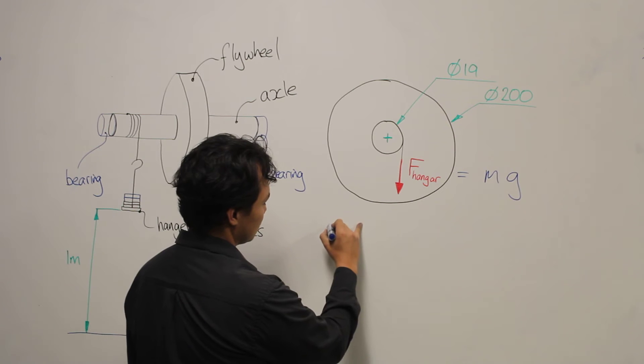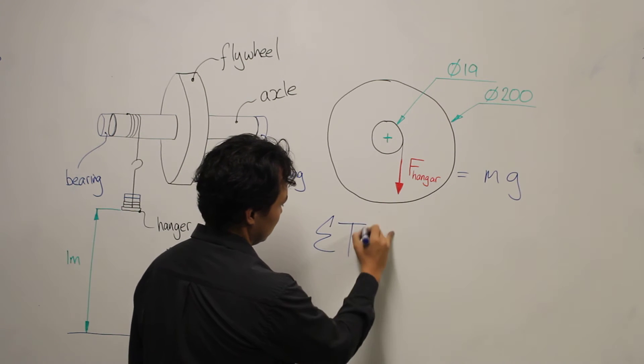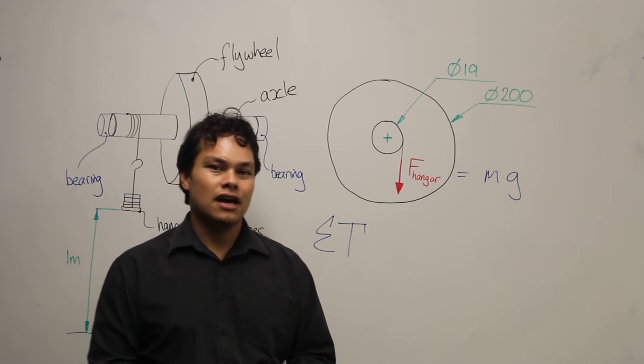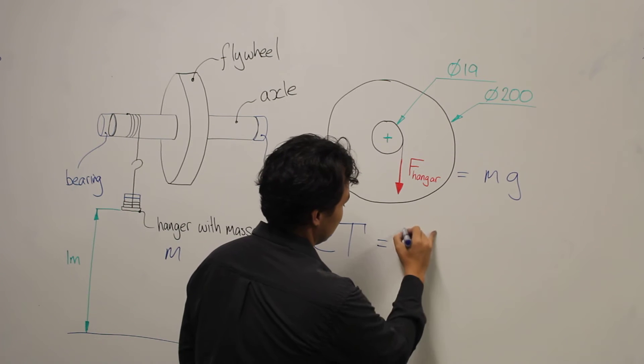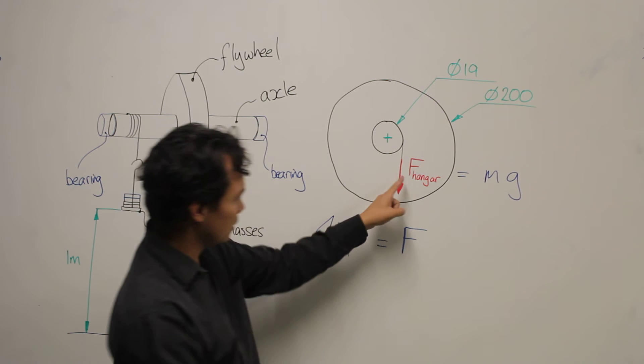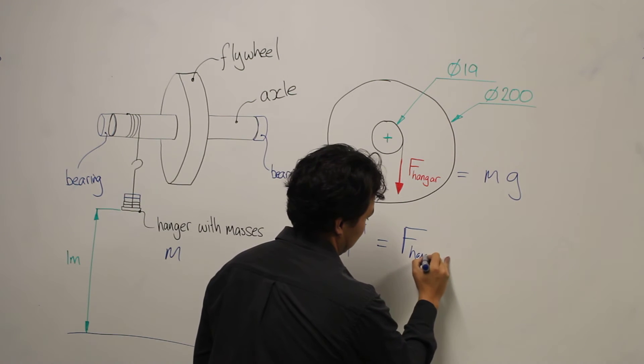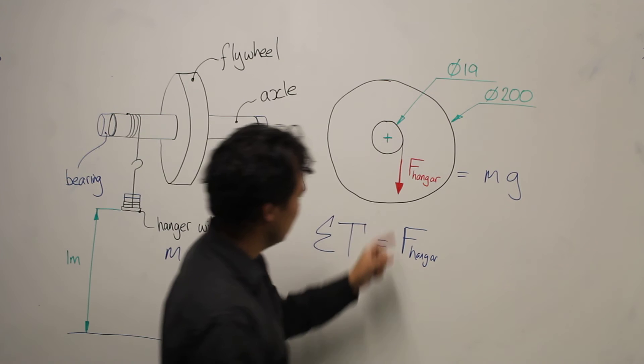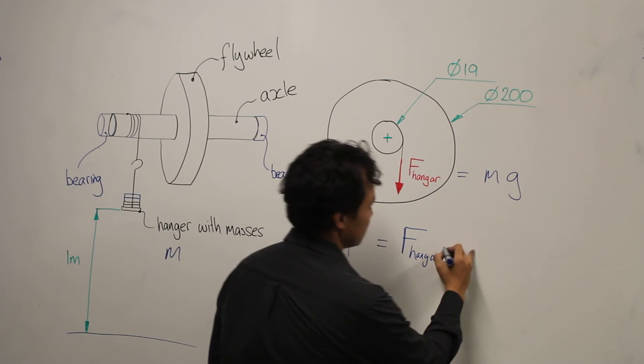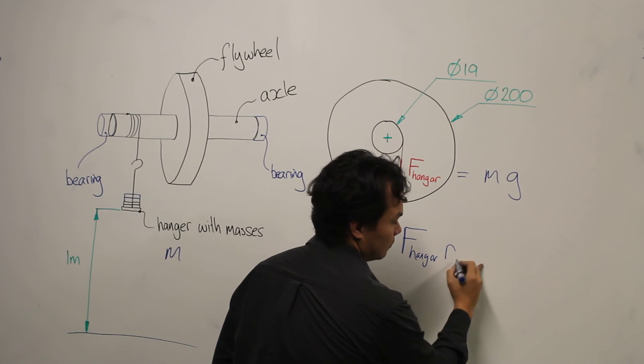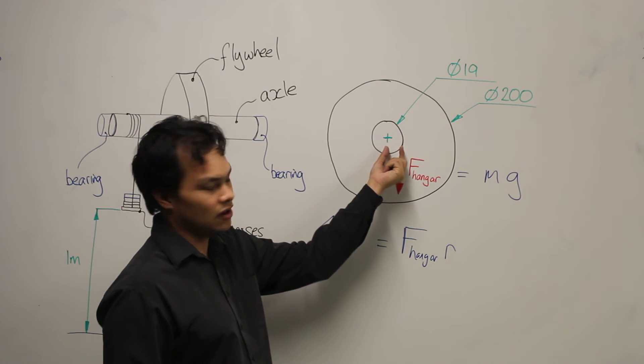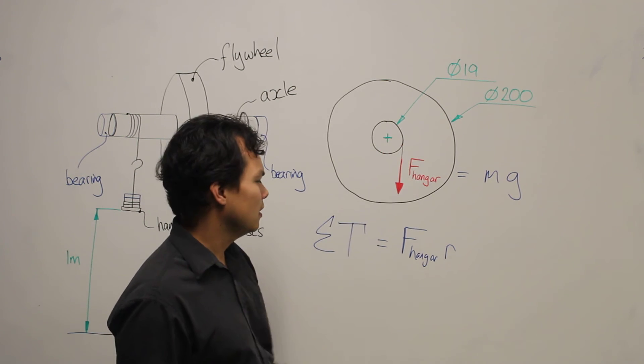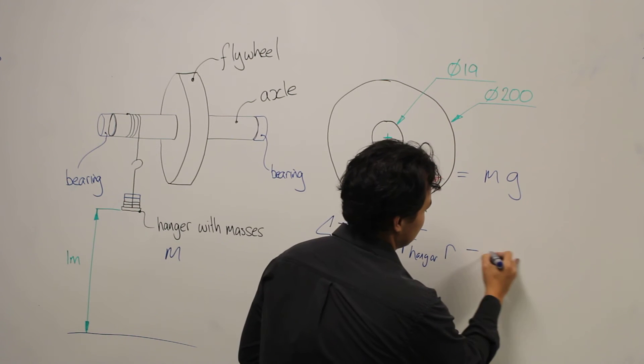we can write the sum of torques acting on our system. The sum of torques will equal the force on the hanger times the radial distance, which will be around 0.9905, minus the frictional torque.